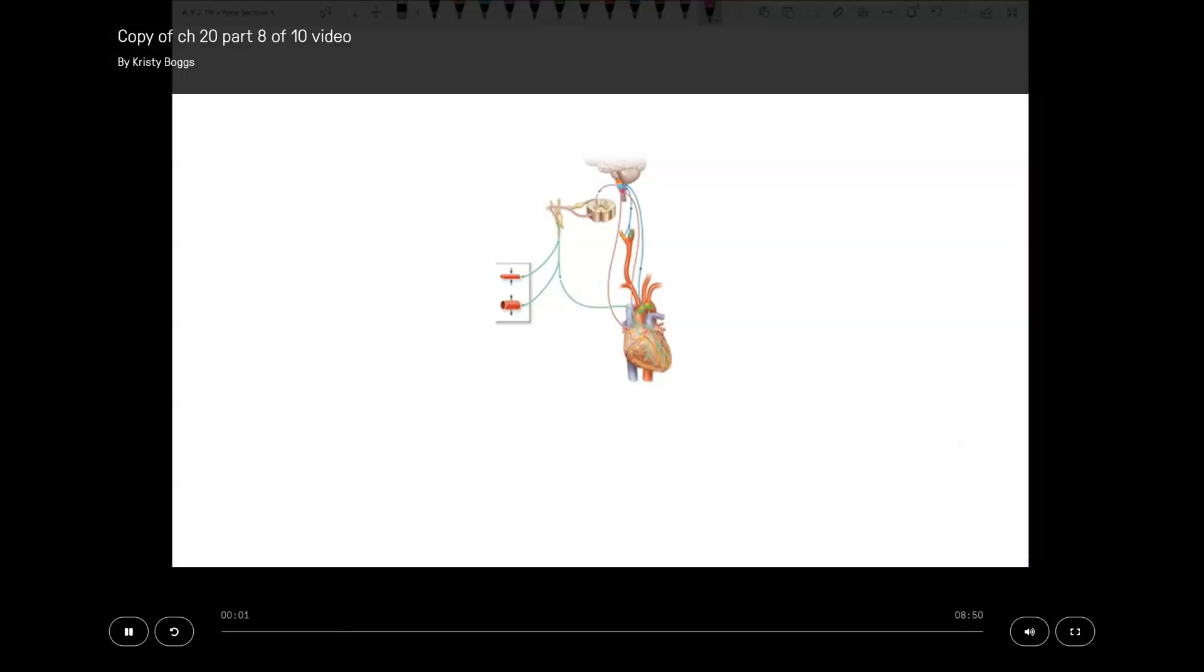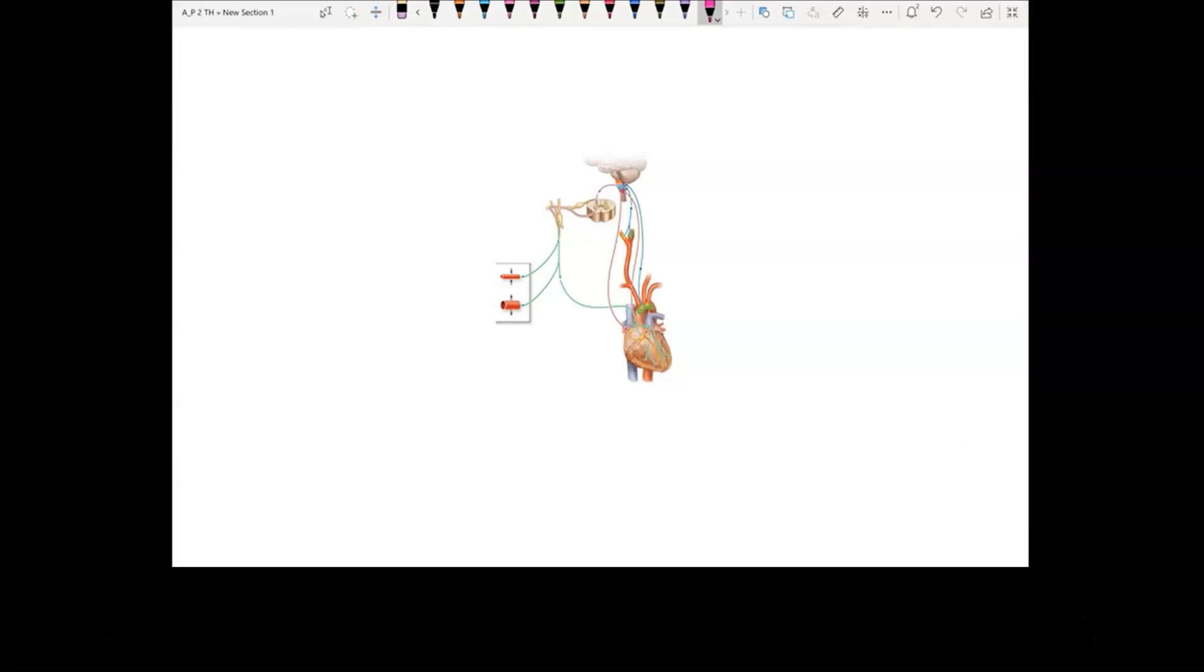Now we can look at nervous regulation of blood pressure. This begins with the medulla oblongata receiving information.